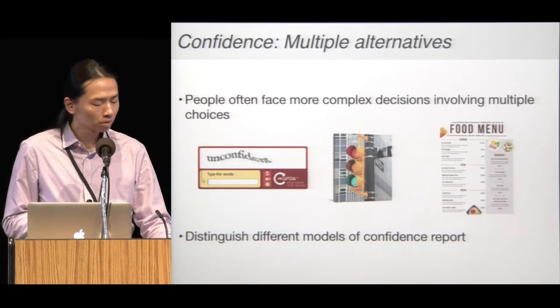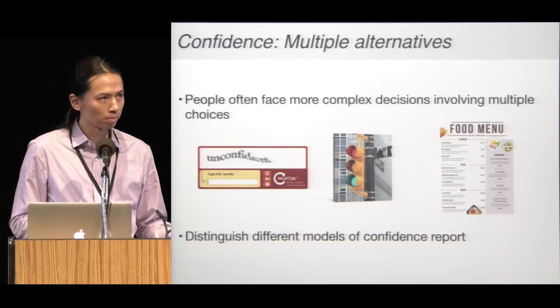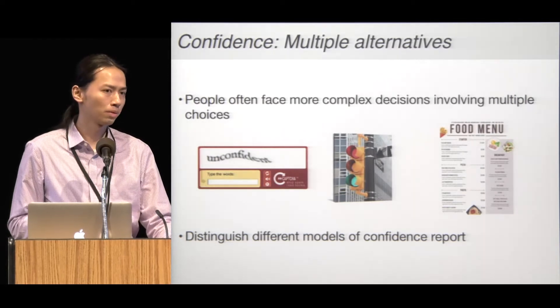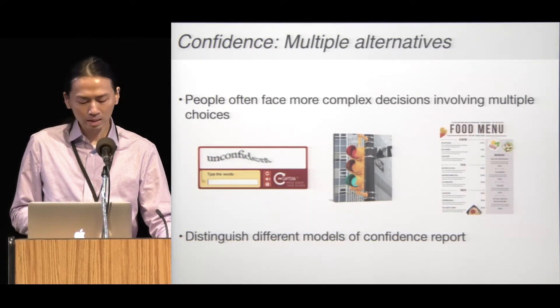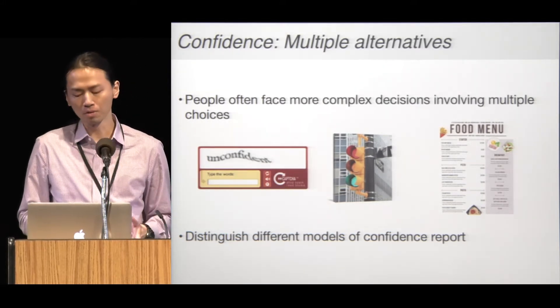In a task with multiple alternatives, how to relate confidence to the posterior probability is more complex than when there are only two options. This gives us an opportunity to distinguish the Bayesian model from other models.